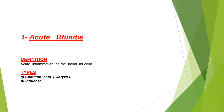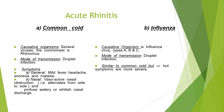Acute rhinitis: its definition is acute inflammation of the nasal mucosa. Its types are common cold, which we see every day, also called choriza, or influenza. What's the difference between common cold and influenza? Common cold causative organisms are several viruses, commonest are the rhinovirus, but in influenza it is influenza virus types A, B, or C. Both are transmitted by droplet infection.